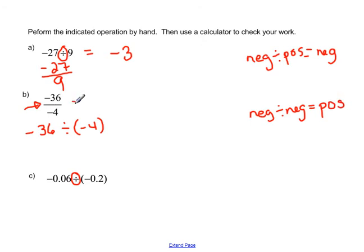So negative divided by a negative is a positive. Because it's positive, we don't have to show the plus sign. But if we want to put it there just to kind of remind ourselves that we've paid attention to the signs, that's not a bad thing to do. 36 divided by 4, then, is just going to give us 9.